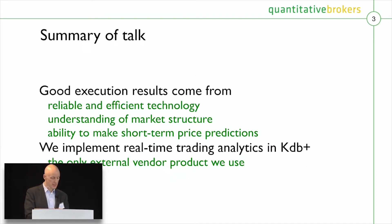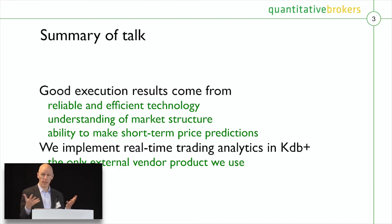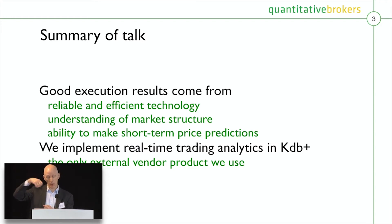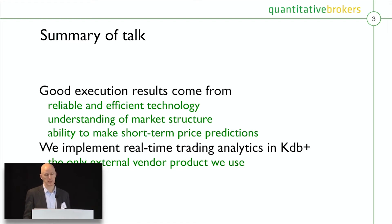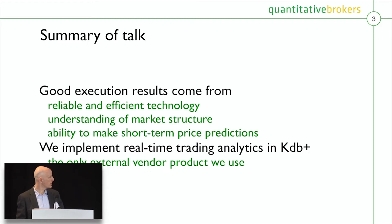To jump ahead to the conclusion of the talk: the way we get good execution is we have good technology — it's reliable, it needs to work, it needs to be efficient. We have to understand in great detail the markets that we trade in. And most importantly for execution is our ability to make short-term predictions of price. The one vendor product we use is KDB+. We use it for historical data and for the real-time processing I'm talking about here. Since we started the company, that's the one product we've been using — it's pretty central in our entire system.